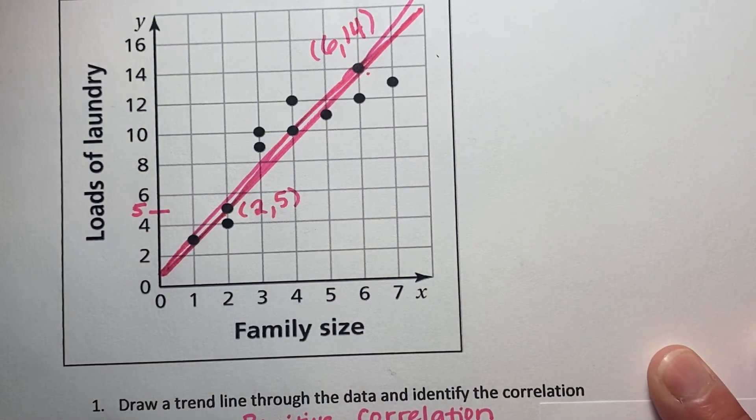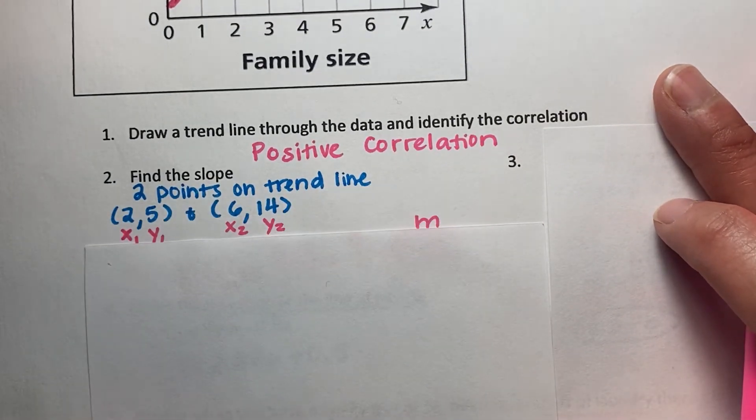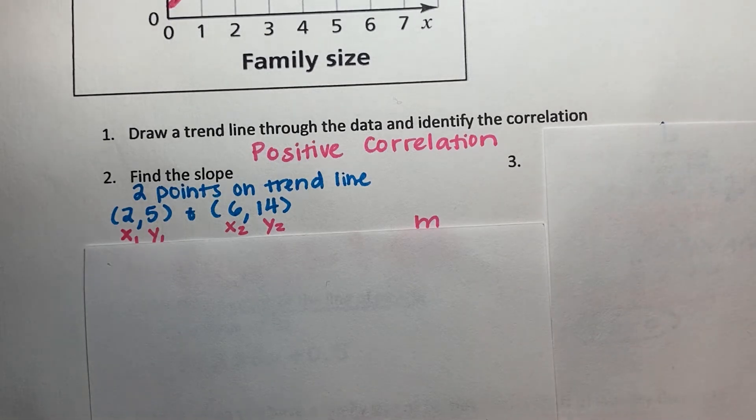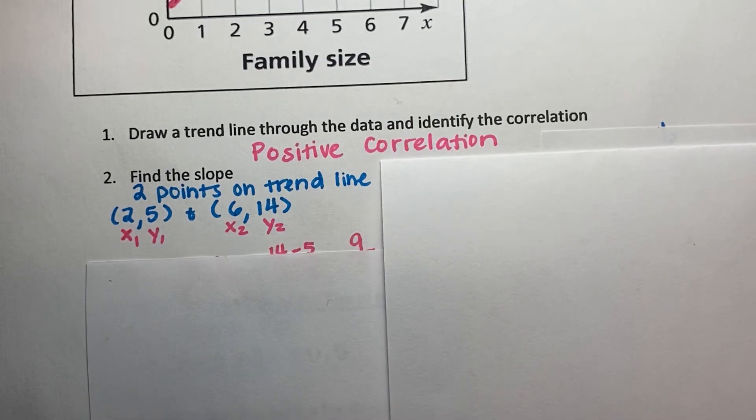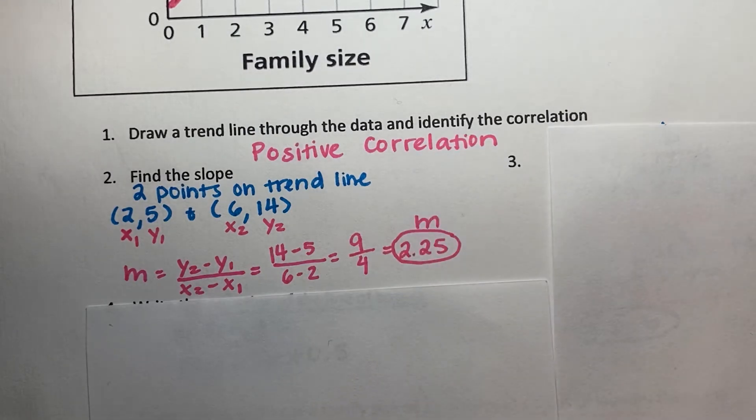So I'm going to use these points to identify my slope. So two points from your trend line. So when I use the two points, I'm going to label them as my x1 and y1. And I'm going to go ahead and plug this into my slope formula. So my slope formula says it's y2 minus y1 over x2 minus x1. And when I do that, I'm going to get 14 minus 5 divided by 6 minus 2. So that's going to be 9 fourths, 9 over 4. And you can also put that in the calculator and you're going to get 2.25. So this will represent my slope for this trend line.